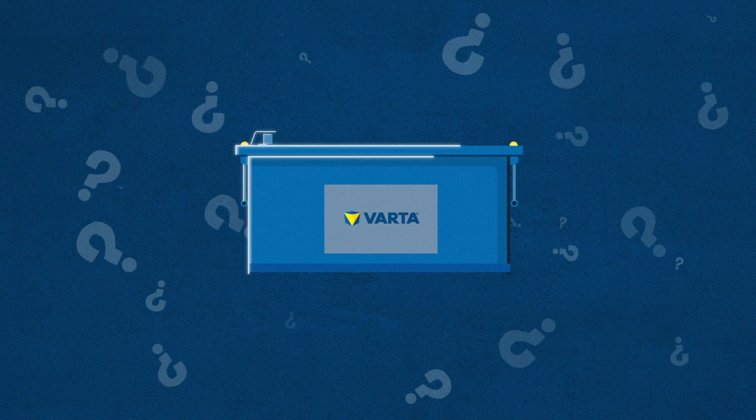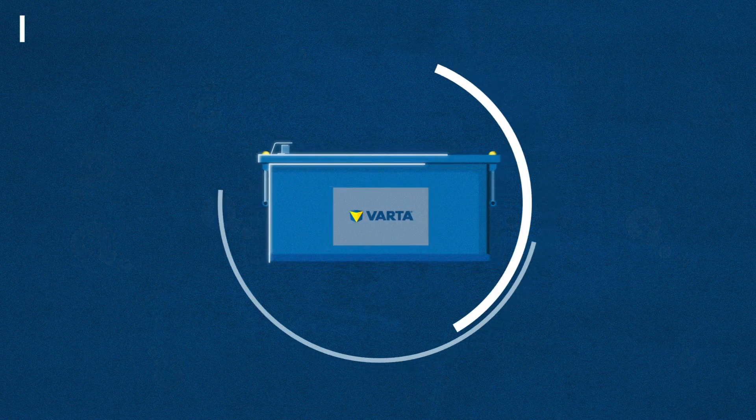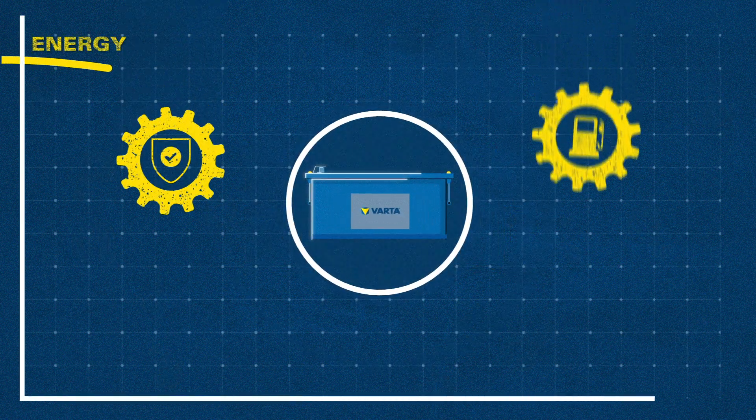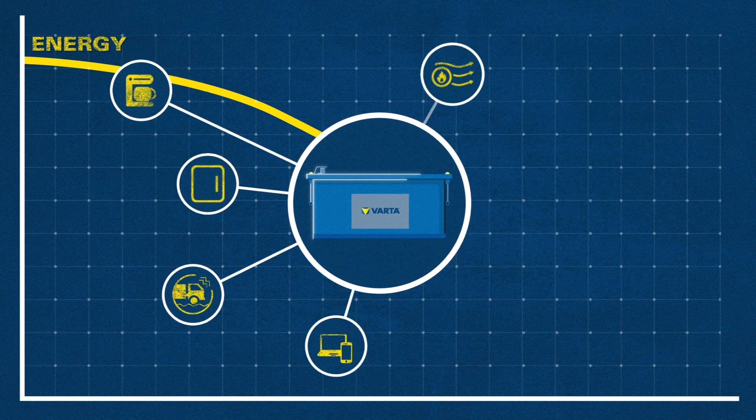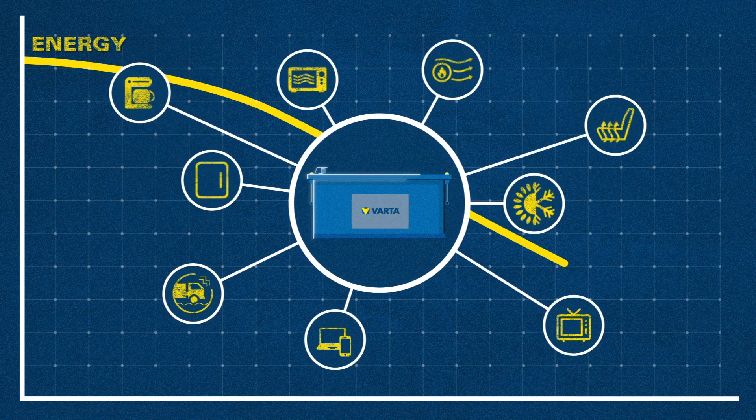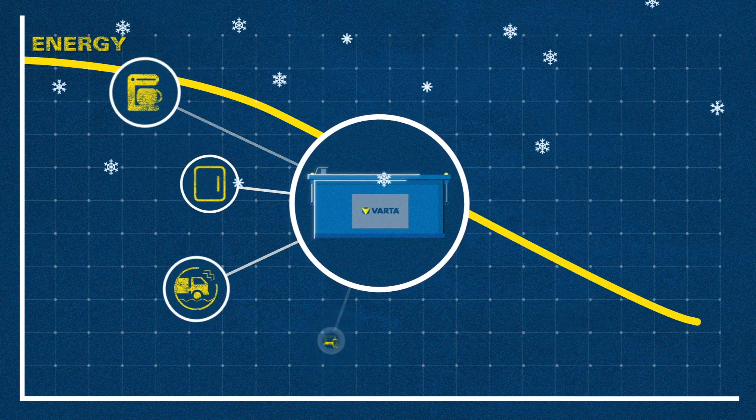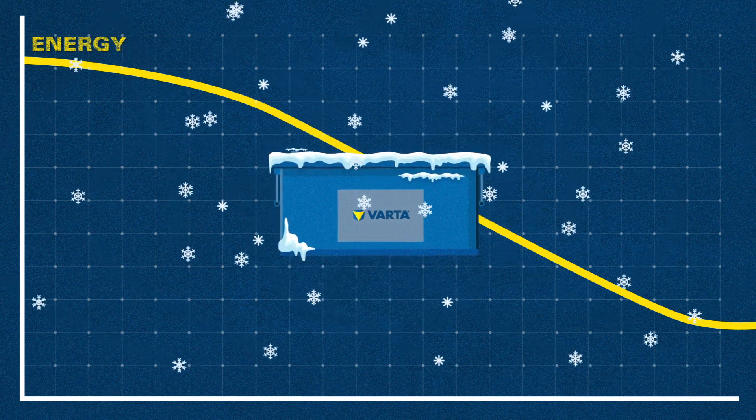And do you know how a VARTA battery uses its energy? It powers the truck's safety and efficiency systems and also all the comfort functions, several nights per week. Even at low temperatures, it will provide reliable energy for starting the engine.